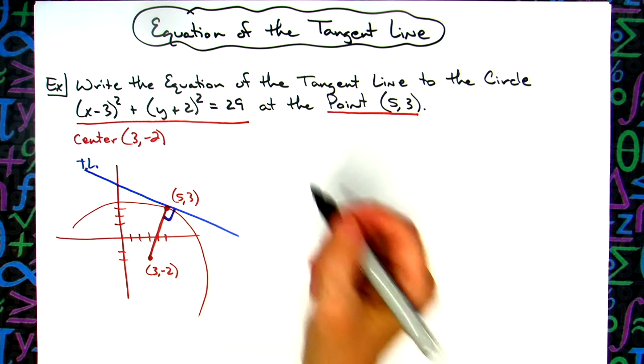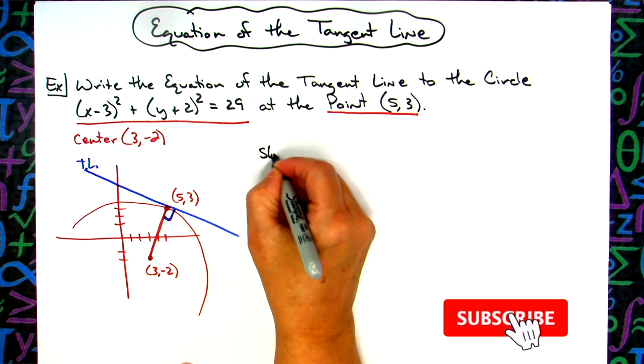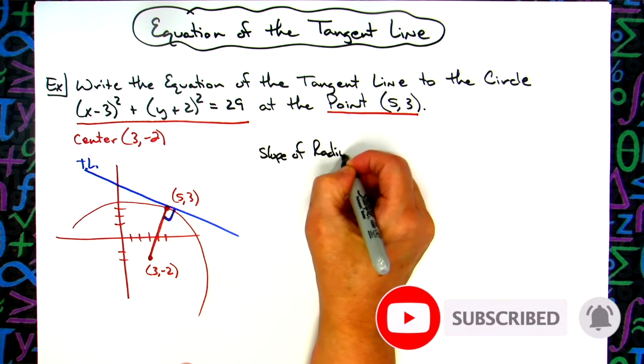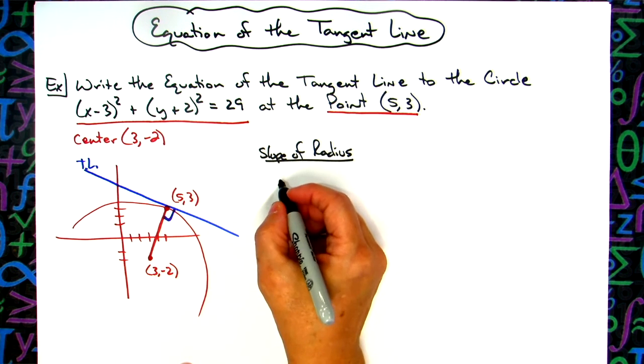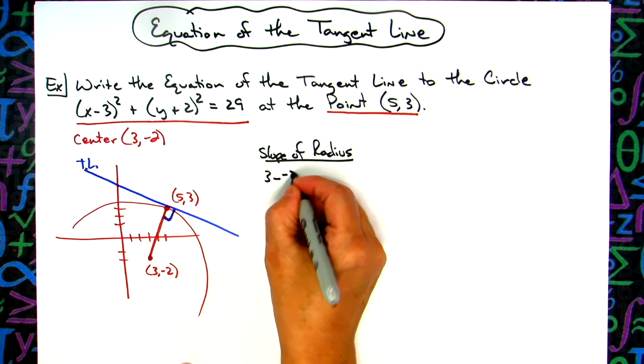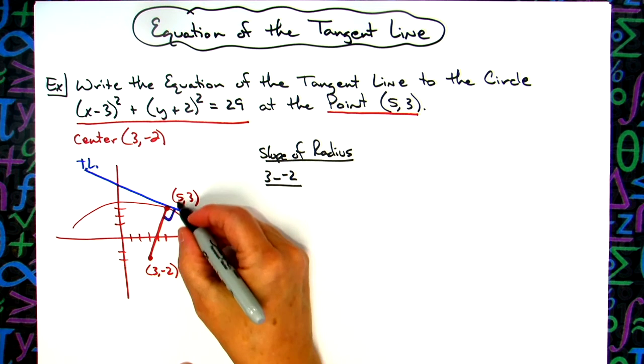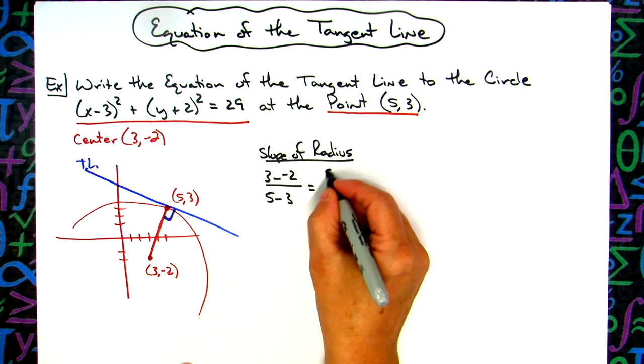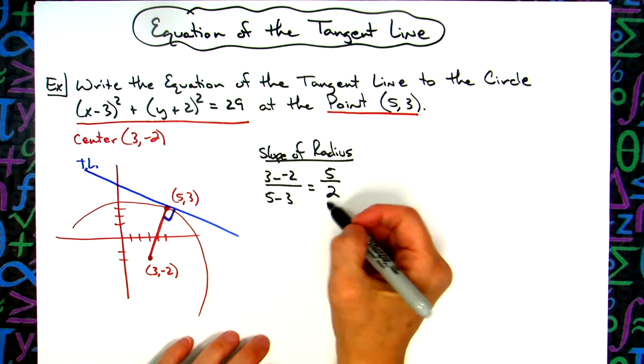So the first thing I'm going to do is I'm going to find the slope of this radius right here. So slope of radius. I'm just going to use good old-fashioned slope formula, change of the y's over the changes of the x's. So I'm going to do a three minus a negative two, change of the y's all over the change of the x's, five minus three. That's going to then give me a five on top and a two on the bottom. That's the slope of my radius.